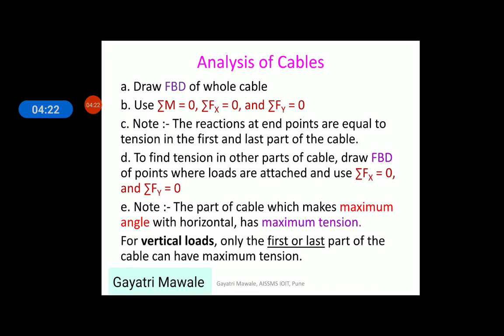And for vertical loads, only the first and last part of the cable can have maximum tension. So, to find out maximum tension, we have to first find angle of first and last part with respect to horizontal. This will help us to know in which part of the cable maximum tension will occur.